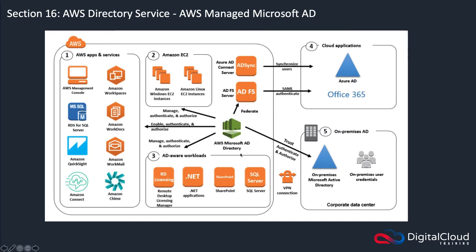With AWS Microsoft AD, you can set up a trust relationship with your on-premises Active Directory. You might do this because you have your users on premises and you don't want to recreate them in AWS. From a security and governance perspective, you're keeping your users in one place but extending their ability to authenticate to services somewhere else. Security credentials like passwords or their hashes are not stored in AWS.